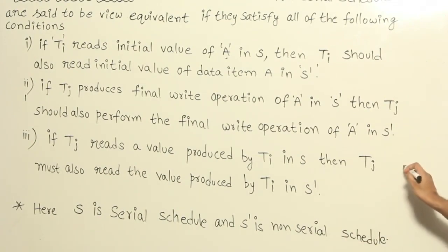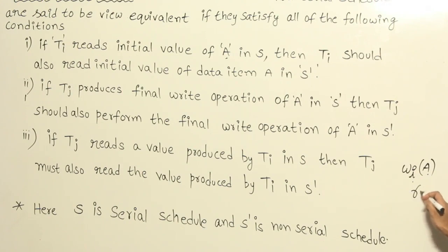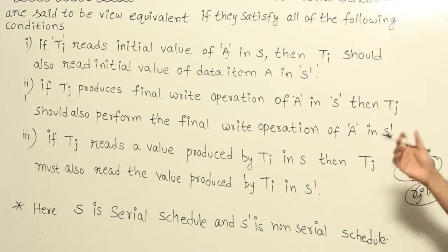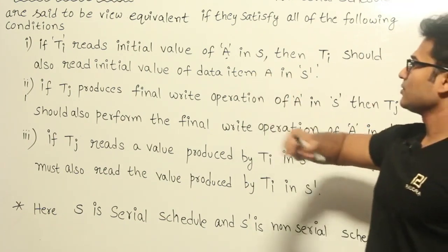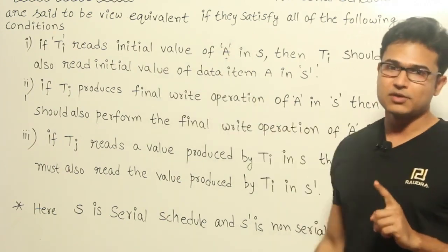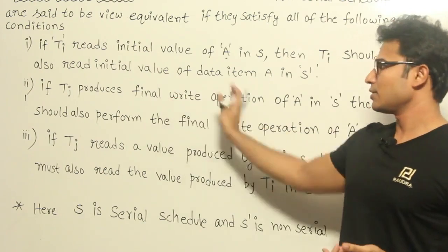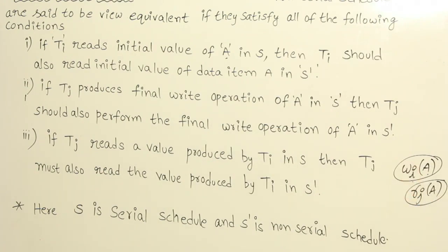The third point is about write-read dependency: if one transaction is writing — let us say WI of A, meaning transaction I is writing data item A — and in one schedule whatever is written by I is read by J, then in the other schedule also the same thing should happen. Whatever is written by I should be read by J. To summarize: first, whoever reads first in one schedule should read first in the other. Second, whoever writes last in one schedule should write last in the other. Third, if there is any write-read dependency, that should be in the same order.